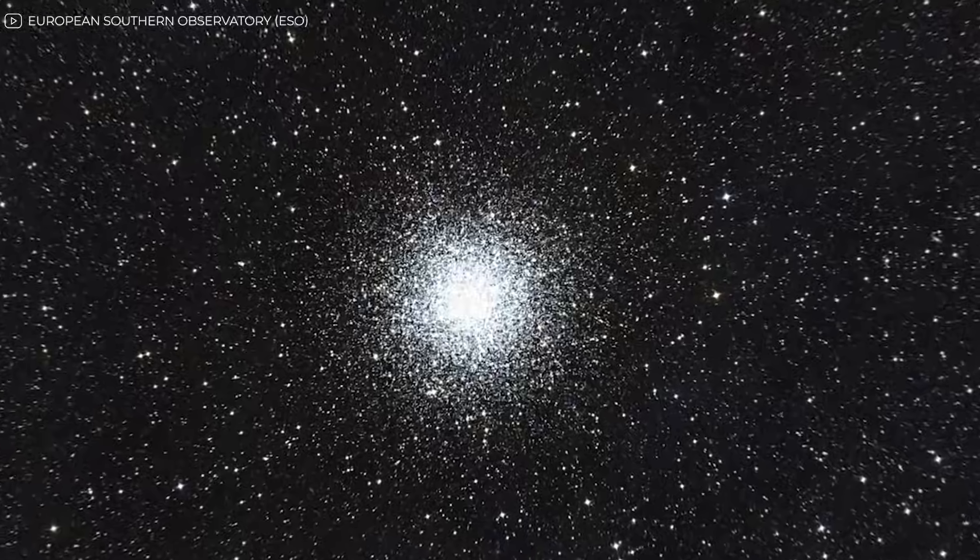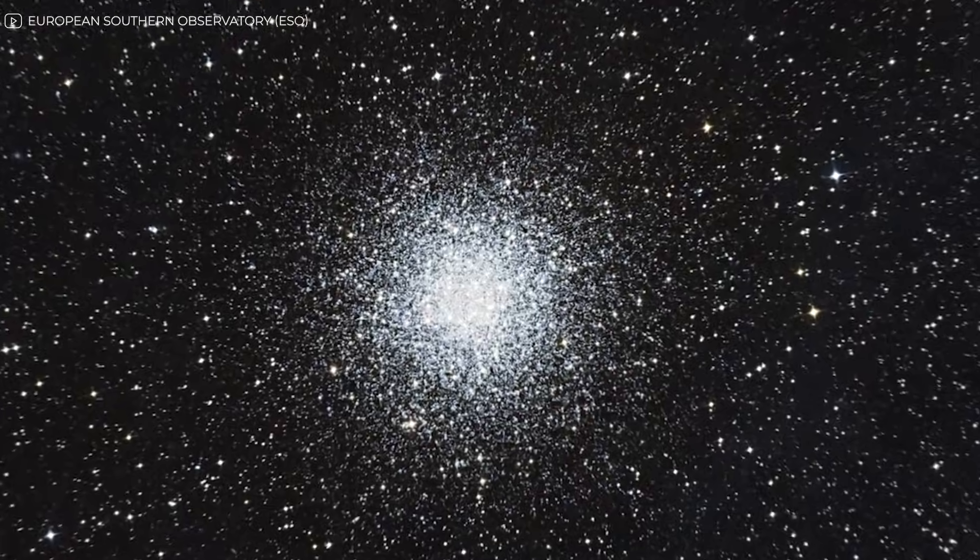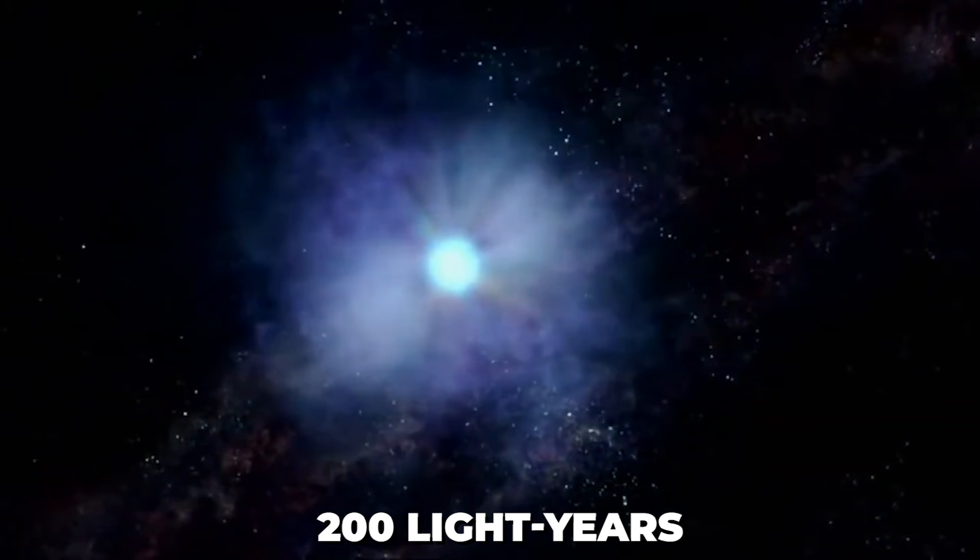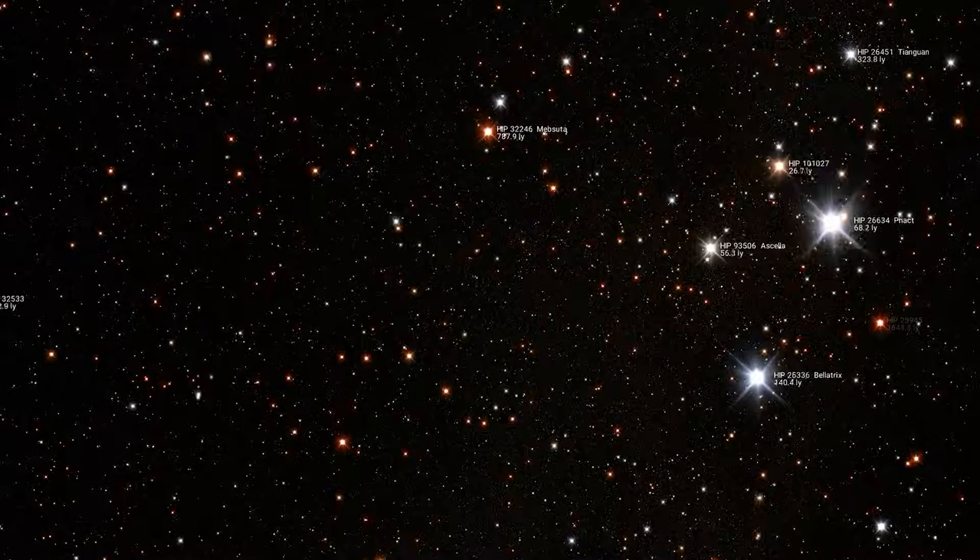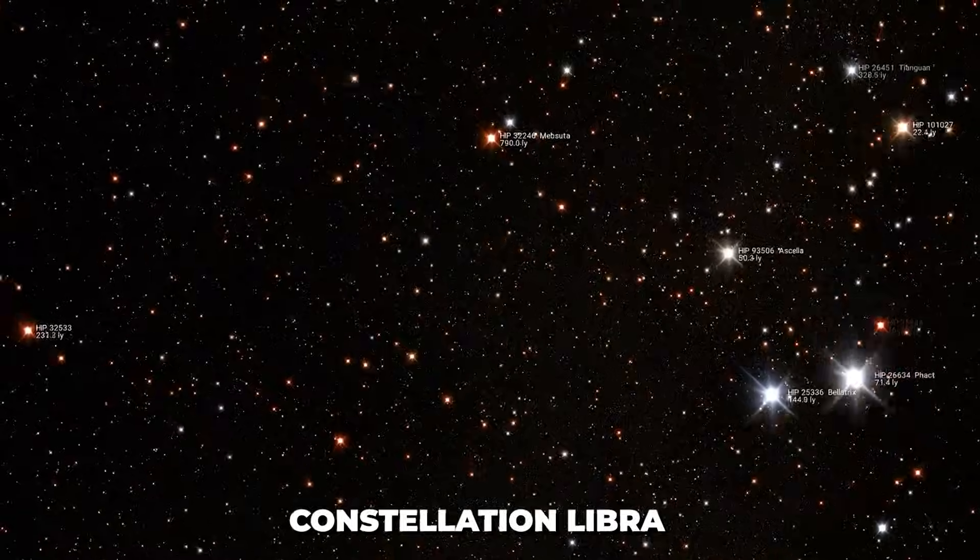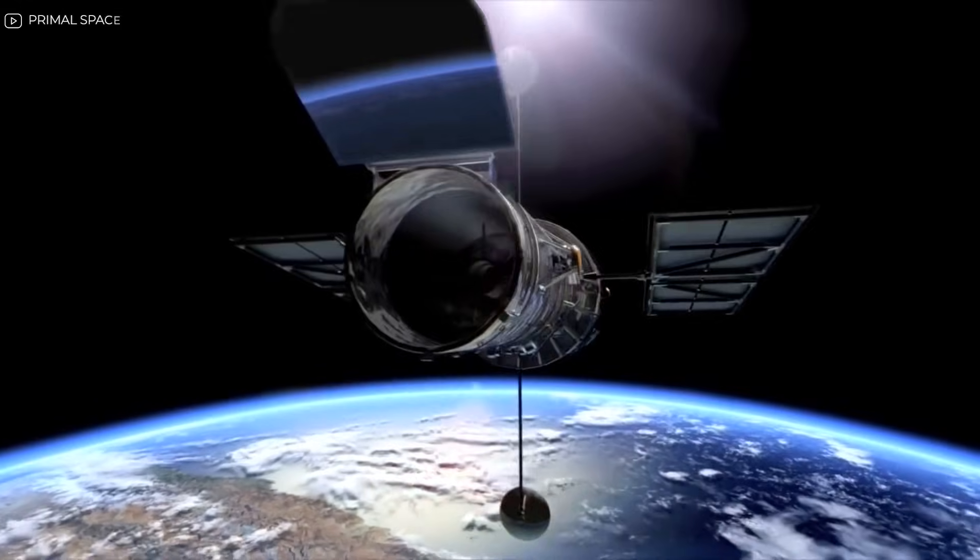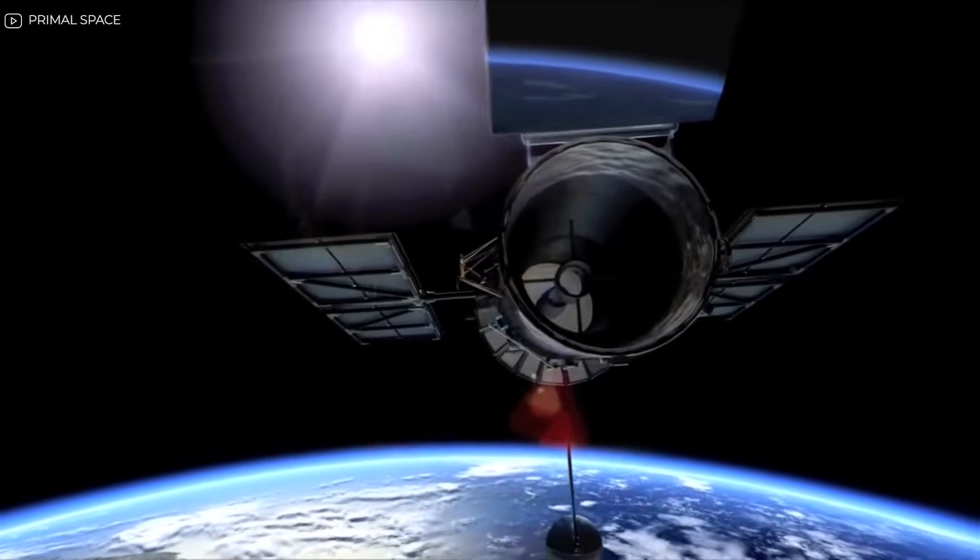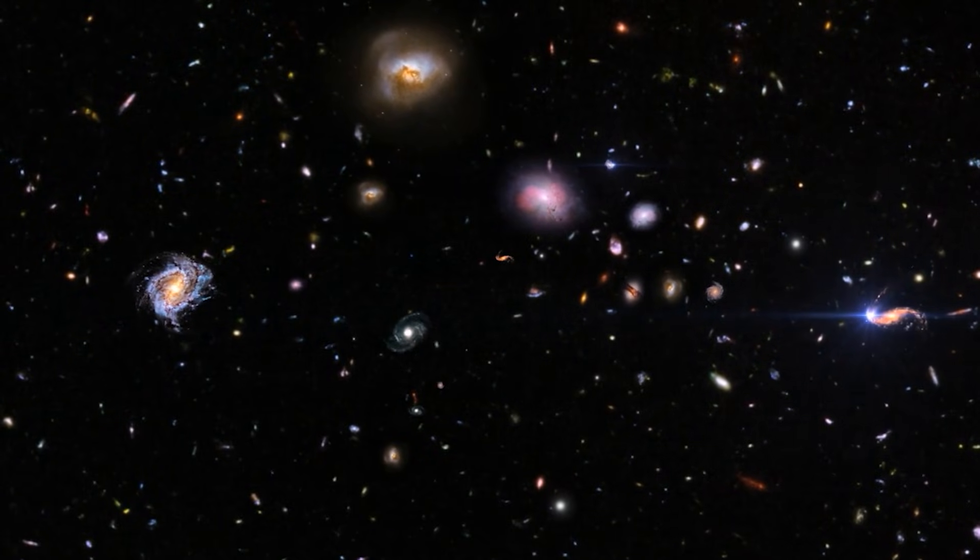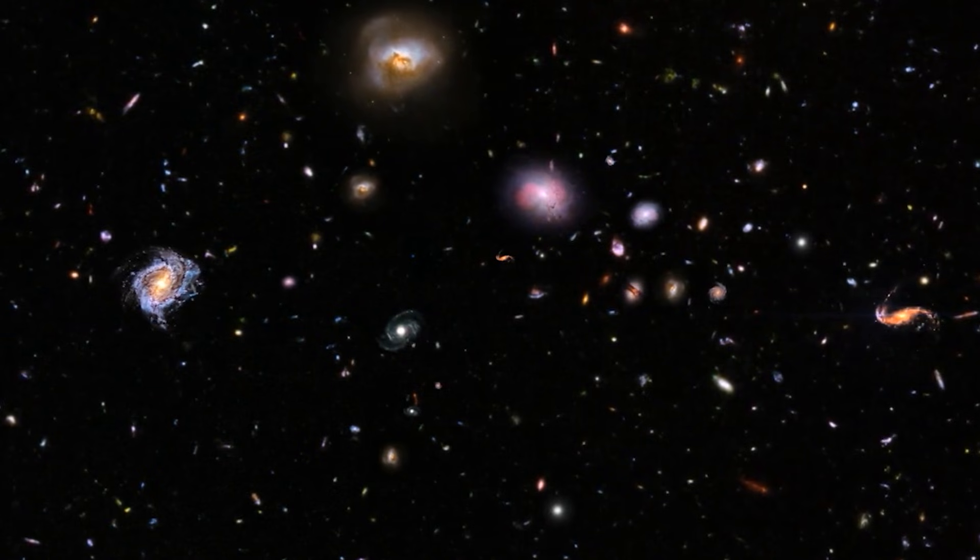This isn't some distant speck we can barely see. It's only 200 light-years away. You could even spot it with binoculars in the constellation Libra. So how does a star break the rules of time? What went wrong with our measurements, or worse, our entire understanding of cosmic history?